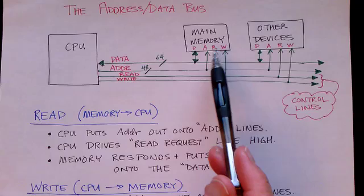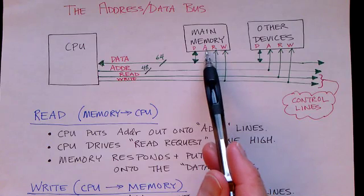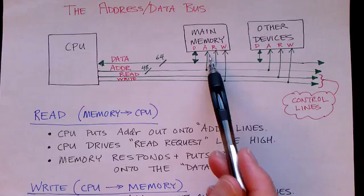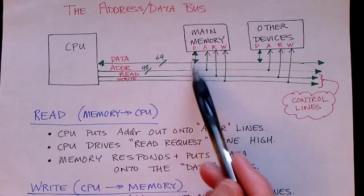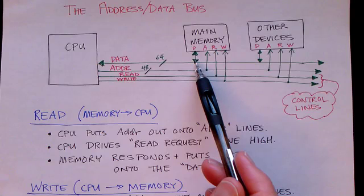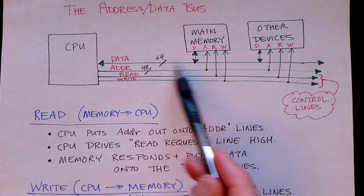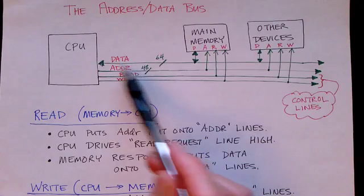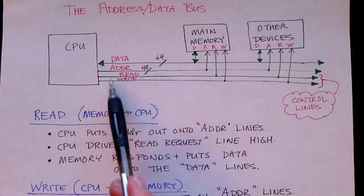So when the memory sees the address that it is supposed to take care of and a read request, then it responds by putting the data from that memory location out onto the data lines, and that data flows back and the CPU then collects that data.